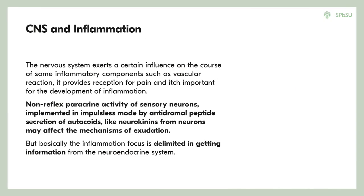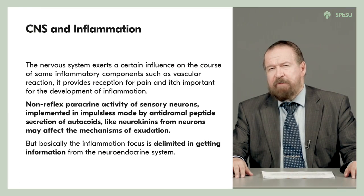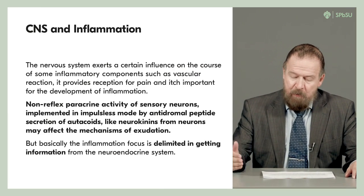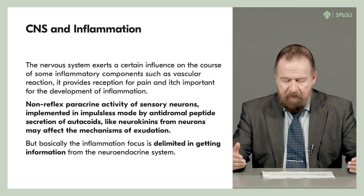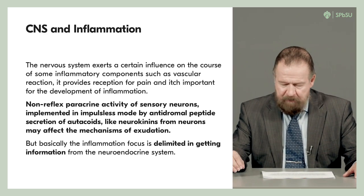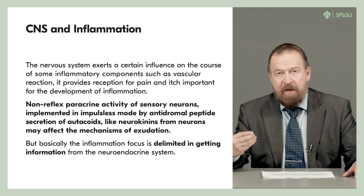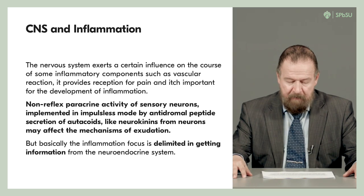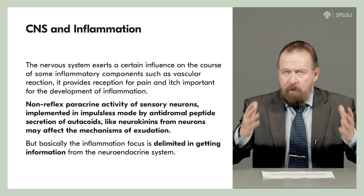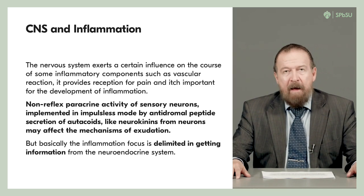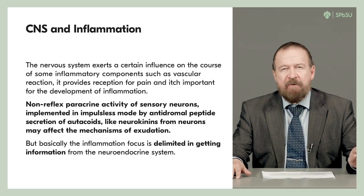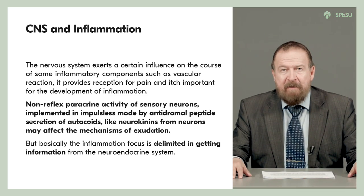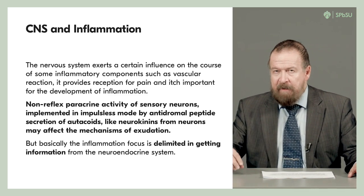The nervous system has some influence on inflammation, but it is not decisive or principal. It may exert a certain influence especially on some inflammatory components such as the vascular reaction. It also provides reception for the sense of pain and itching, which may accompany inflammatory foci. But especially important is the non-reflex, paracrine activity of sensory neurons, because they are also endocrine cells — not only relay elements in the CNS.